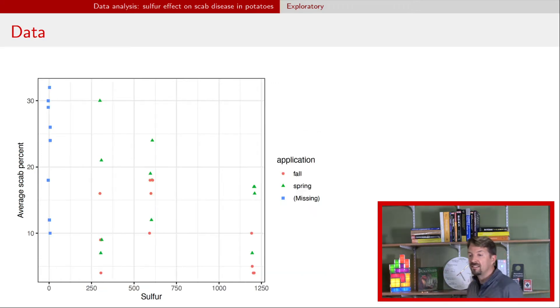Another way of looking at these data is to just put sulfur on the x-axis, put the scab on the y-axis. Now we have different colors and shapes for fall, spring, and missing. You can see all the missing observations are over there and sulfur is zero. And now you can try to look at this to determine what the effect of sulfur is. It looks like overall there's a decreasing pattern. And maybe you can also see that generally the fall values are smaller than the spring values for the same sulfur amount.